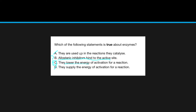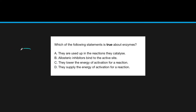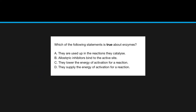Allosteric inhibition — if you're taking the SL course, you won't really need to know about this. Basically, inhibitors can either bind to the active site, taking up room for the actual substrate, or they will bind to another part of the enzyme and totally change its shape, preventing the substrate from binding. Allosteric is more of an HL topic, covered later. You just have to know that allosteric inhibitors do not bind to the active site.